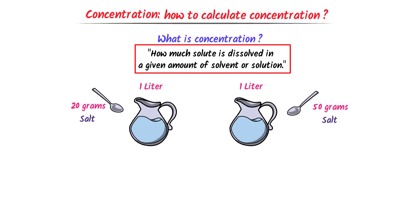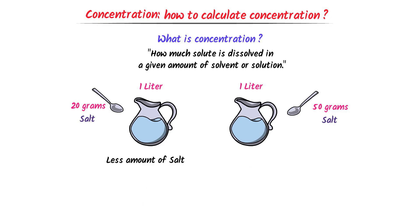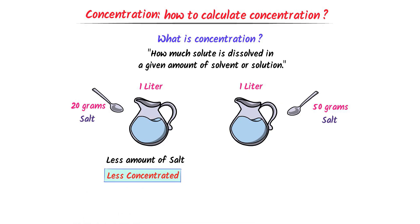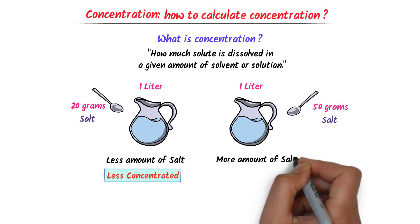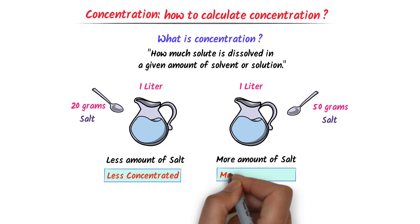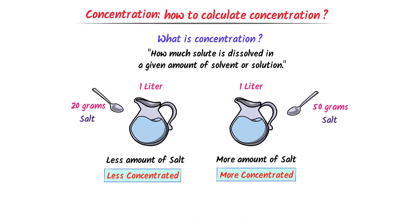According to the concentration definition, this jug contains less amount of solute — less amount of salt — so we say that it is a less concentrated solution. While this jug contains more amount of solute — more amount of salt — so we say that it is a more concentrated solution.